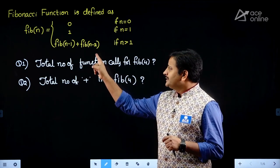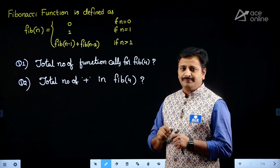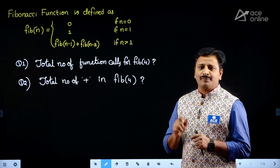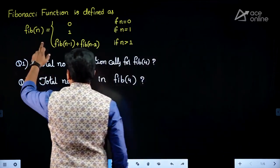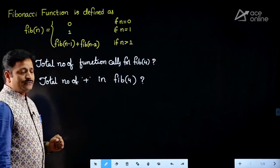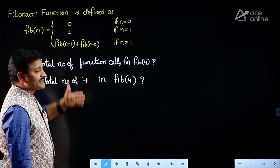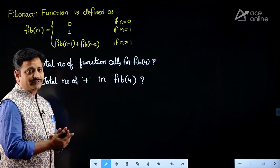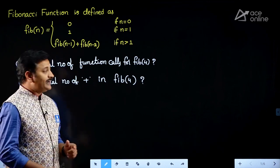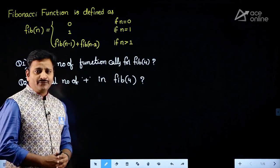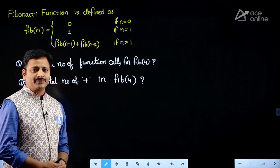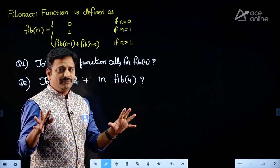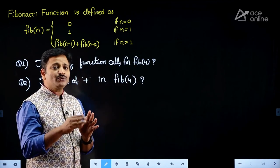This topic comes under the stacks chapter in data structures. Under stacks, we have several applications, one of which is called recursion. Solving the Fibonacci series comes under the recursion topic, so this topic is related to applications of stack. In this video, I will not go in depth to explain the program using a stack, but I will explain the shortcut approach for finding the number of function calls and number of plus operations for computing Fib(4). The general approach uses a recursion tree — I will quickly draw it and explain.